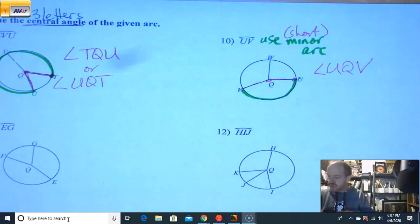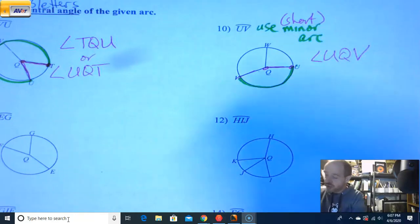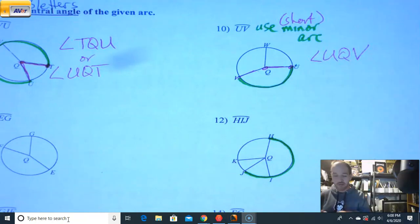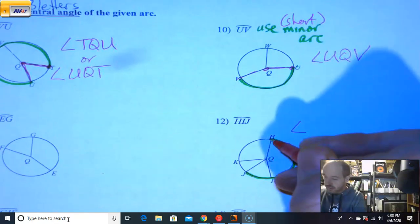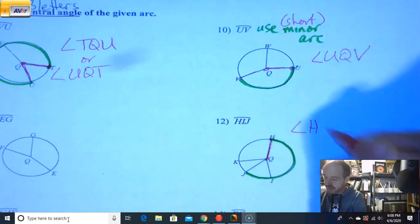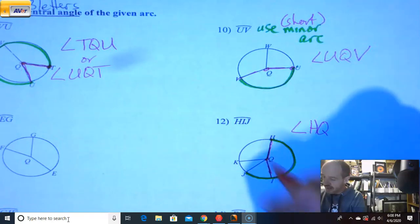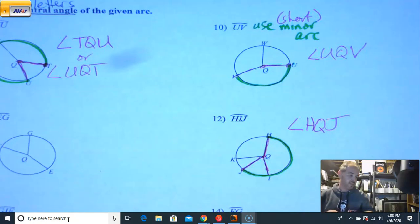So one more, just to make sure we're on the right track. Again, two letters, assume minor, assume short arc. Three letters, like we have here in 12, we're going to assume H, I, J. Yep, that's a major. And again, to make your angle, start at H, head to the middle, there's my vertex, Q. Maybe we use Q a lot for the vertex. It actually helps if you go to the end of the graph. Sorry about that. H, Q, J.